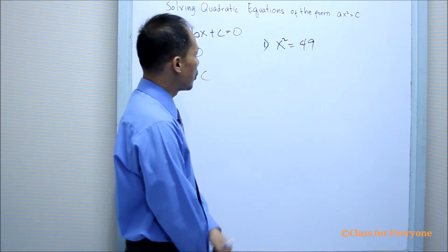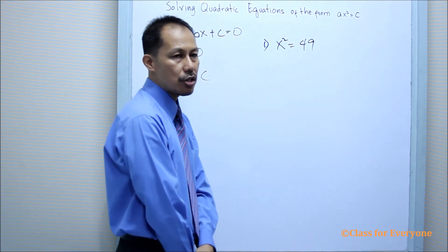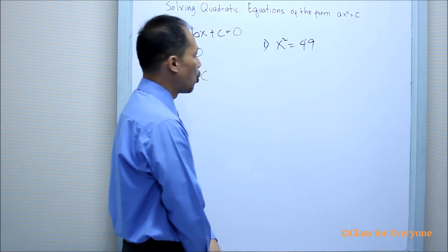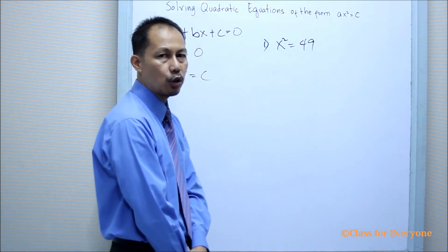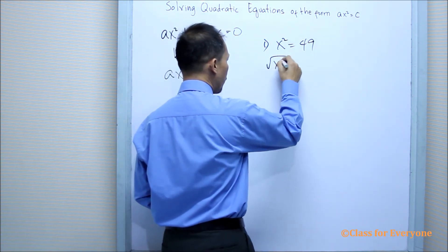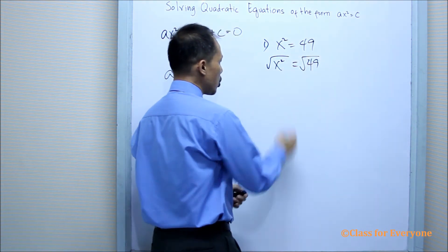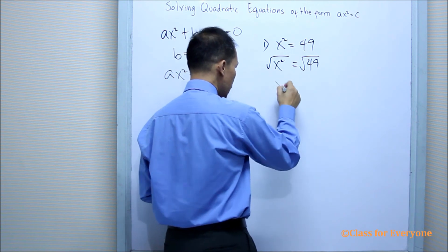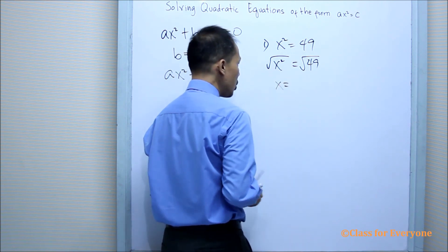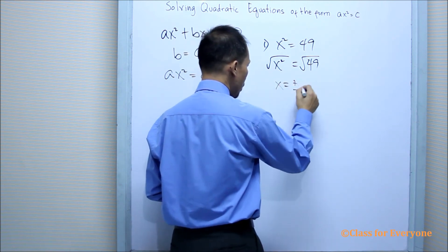There is no parentheses and there is no fraction, so we're going to find the square root of both sides. Finding the square root of x² and the square root of 49, the square root of x² is x, and the square root of 49 is positive/negative 7.